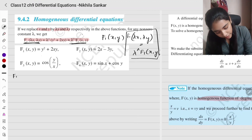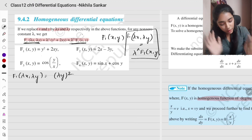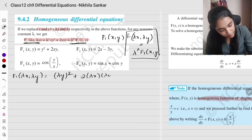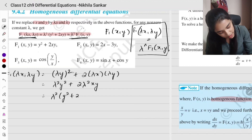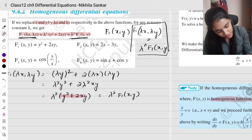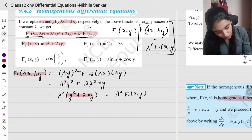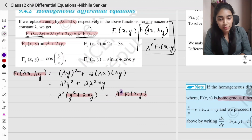First example: f1(x, y). Substituting lambda x and lambda y gives (lambda y)² + 2(lambda x)(lambda y) = lambda² y² + 2 lambda² xy. Taking lambda² outside gives lambda²(y² + 2xy), which is lambda² · f1(x, y). So f1(lambda x, lambda y) = lambda² · f1(x, y), confirming it is homogeneous of degree 2.